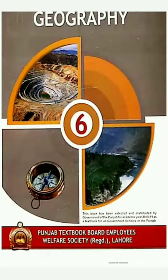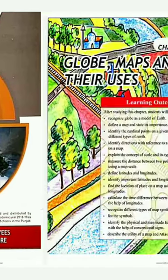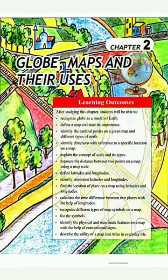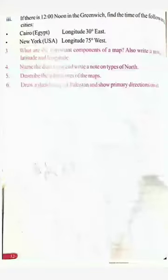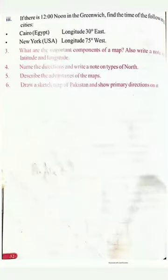Bismillahirrahmanirrahim. Assalamualaikum students, how are you? I hope all of you are well. Open your book — Geography, Class 6 — and your chapter number 2: Globe, Map. Now we will read about globe, map, and its uses. Map is our most important part, so we will also read the advantages of map. Question number 5: describe the advantages of the map. Today we will do this work in our copies.